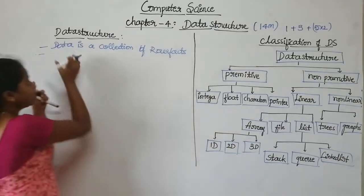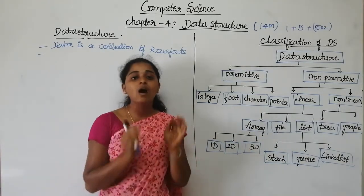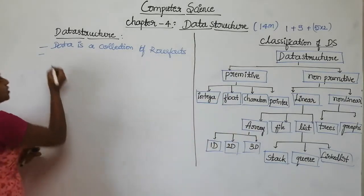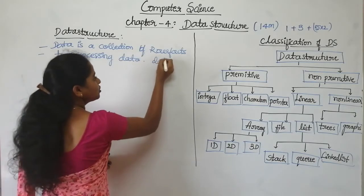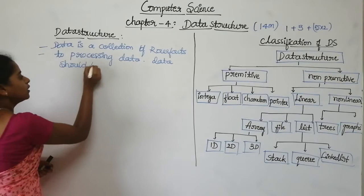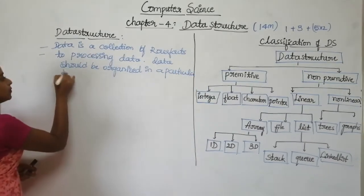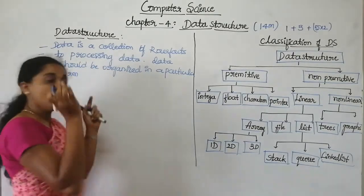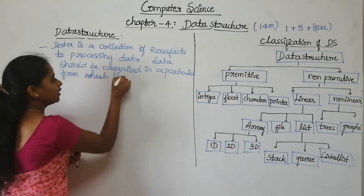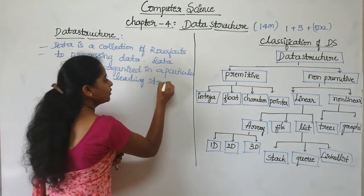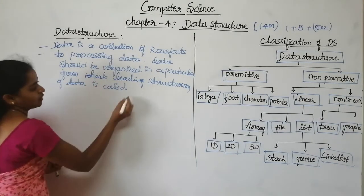To process this data, the data should be organized in a particular form, which leads to the structuring of data. This organizing of data in a particular form is what leads to the structuring of data, which is called as data structure.